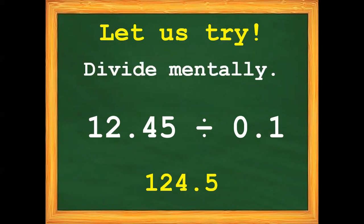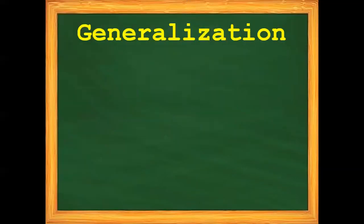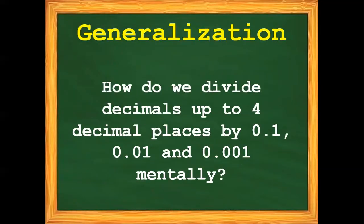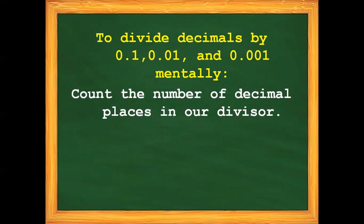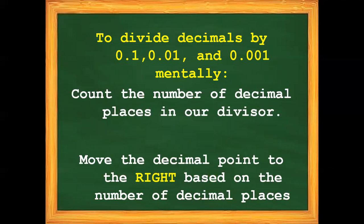Always remember: how do we divide decimals up to four decimal places by one-tenth, one-hundredth, and one-thousandth mentally? To divide decimals mentally, follow these steps. Step number one: count the number of decimal places in your divisor. Step number two: move the decimal point to the right based on the number of decimal places in your divisor.